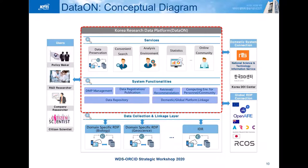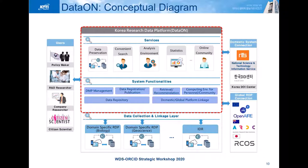DataON offers five main services: data preservation, convenient search, analysis environment, statistics, and online communities. Specialized centers for each scientific field are hierarchically linked to DataON, and institutional data repositories (IDR) can also be linked. Currently, more than 10 IDR systems are underway. Global aggregators such as OpenAIRE in the EU, ARDC in Australia, and IRDC in Japan are linked as well. DataON offers several search methods such as facet search, map search, and detailed search, and supports easy preview of large research data on the web. An online community function is also provided so that users can create research communities, invite colleagues, and conduct research using datasets and analysis environments.